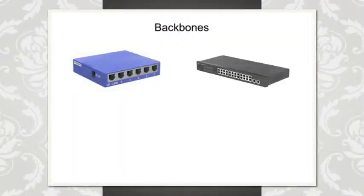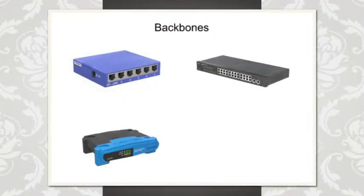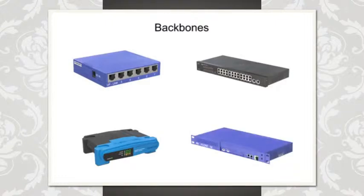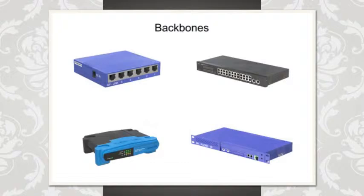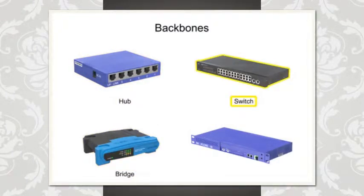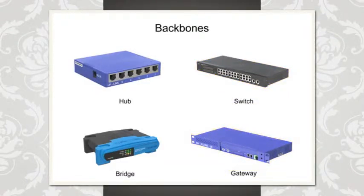Signal flow and data transfer are assisted within a network by various devices known as backbones. The four different backbone devices are hubs, bridges, switches, and gateways. Each device transports data in a specific way.